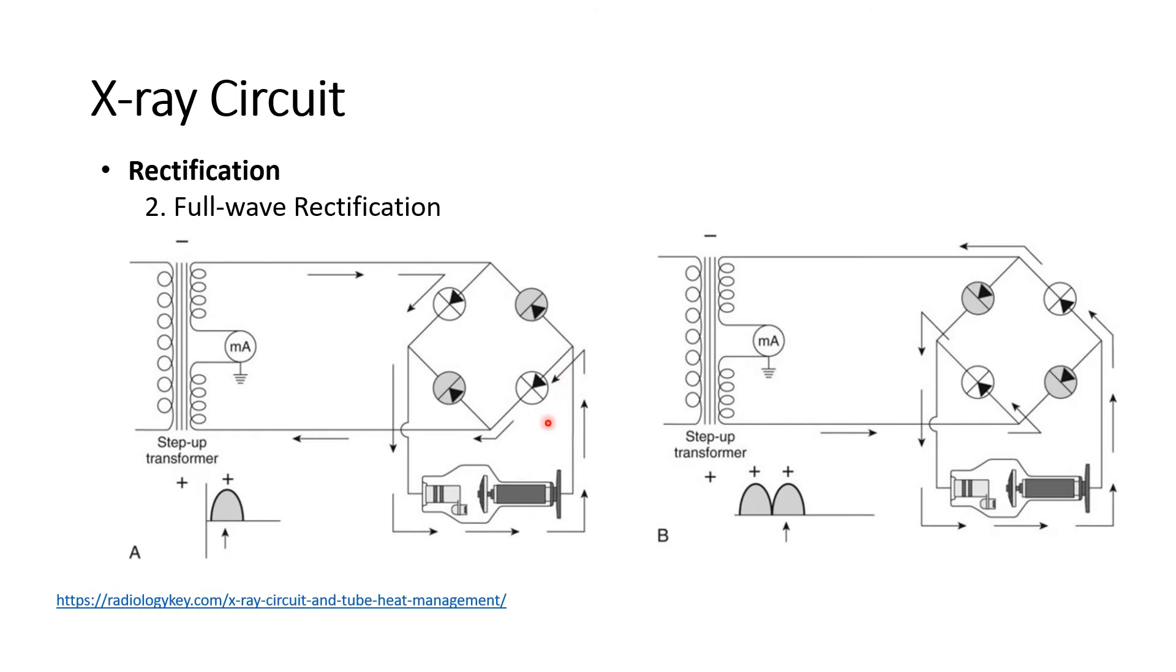Current can be redirected so that it will only flow in the same direction throughout the cycle, thus producing a DC. This process is full wave rectification wherein the entire electric cycle is used for X-ray production. In this case, the X-ray output will occur at 120 Hz compared to the 60 Hz for half wave rectification, thus doubling the X-ray output.